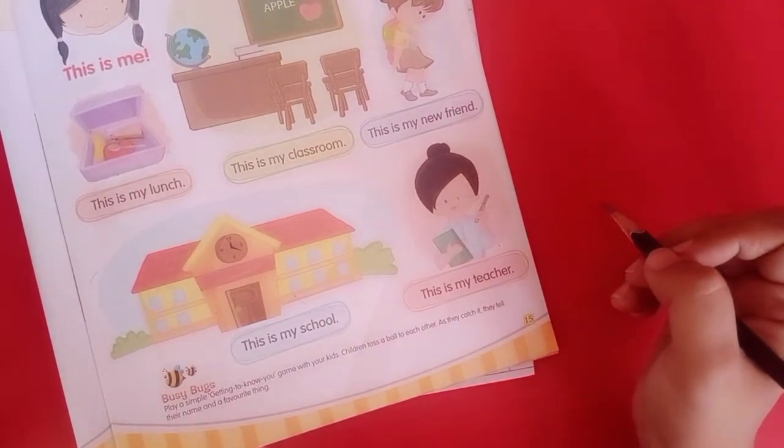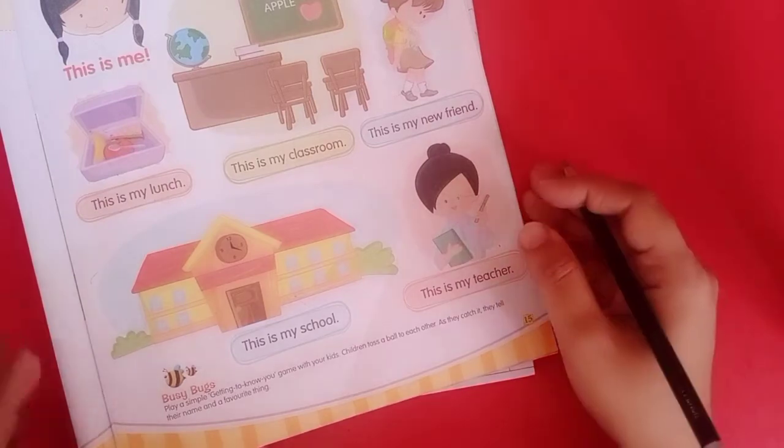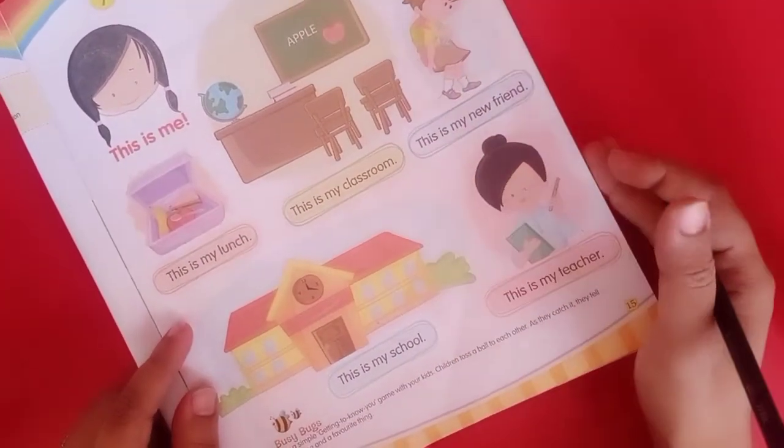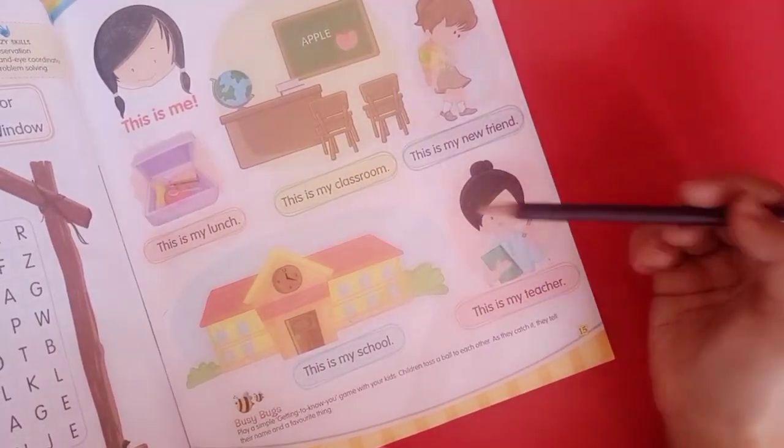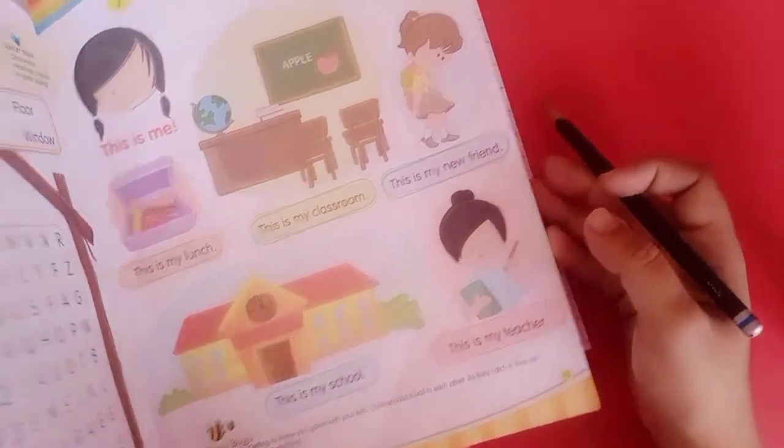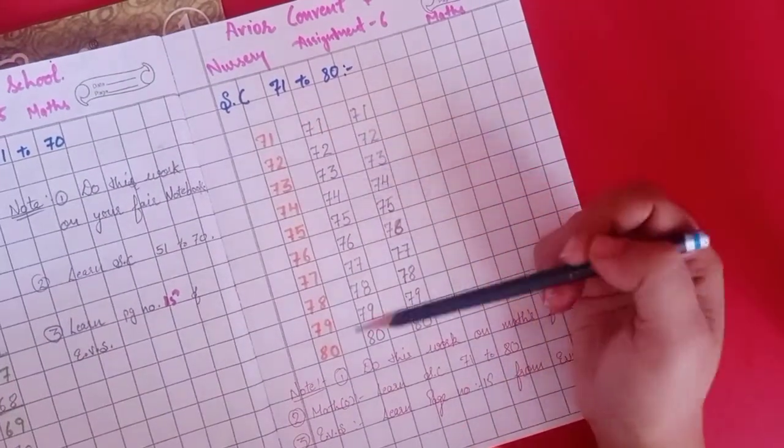So you will revise this page properly with the help of your parents and this video. Serial counting 71 to 80.